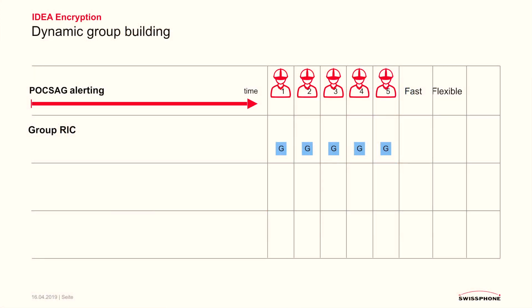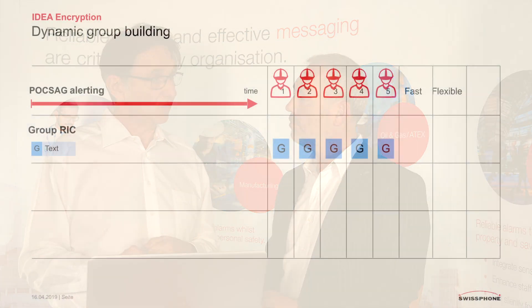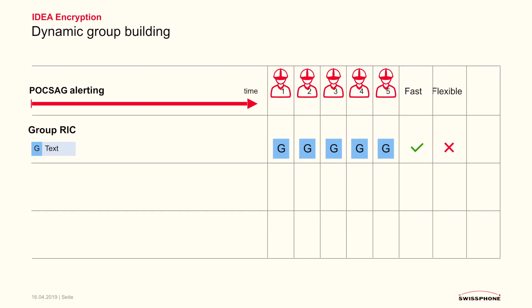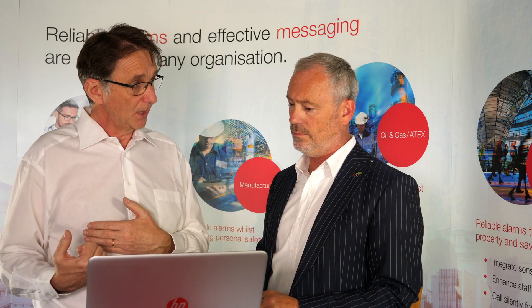A common address for all pagers — and all pagers will signal the reception of the message. So this is a very fast way of alerting, but also a less flexible way. And why is it less flexible? Nowadays, responders often change groups. A responder can, for example, leave group A and join group B, and each time they change groups, their pager has to be reconfigured.